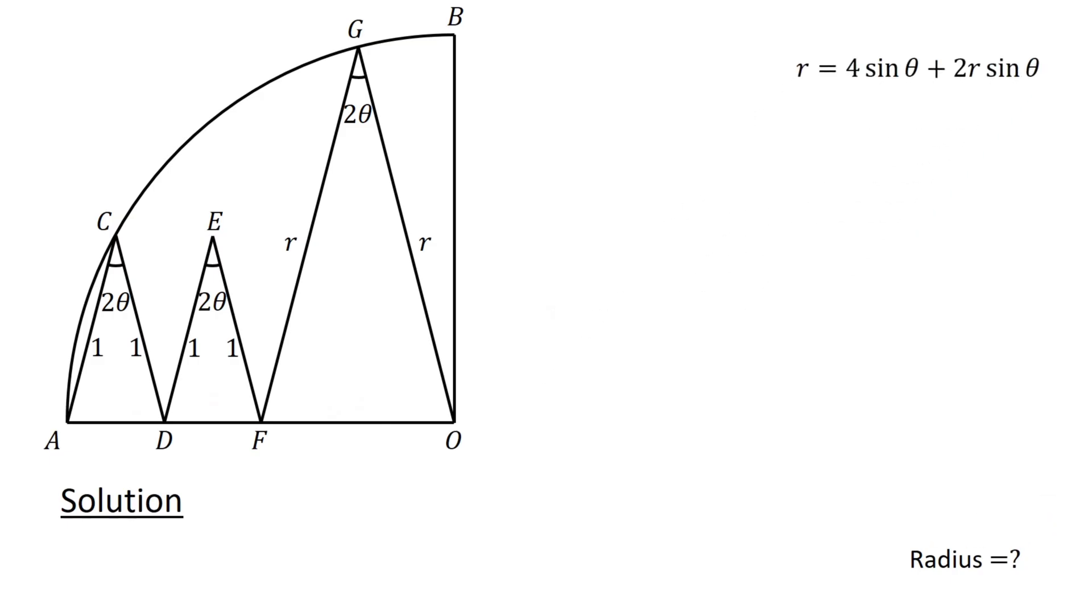Next, let's calculate angle CAD, which is the base angle of triangle ADC. It equals 180 degrees minus 2 theta divided by 2, or 90 degrees minus theta.